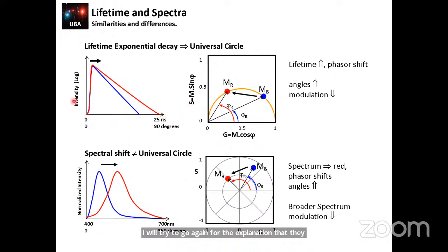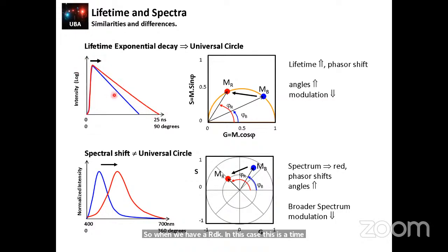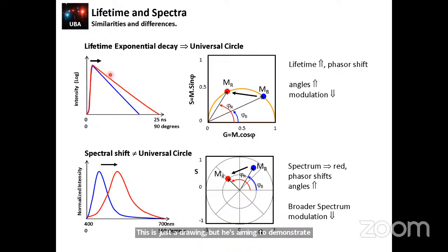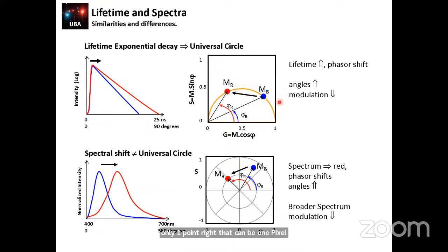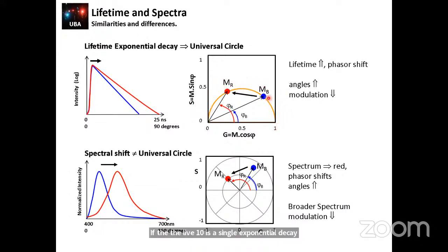When we have a decay — in this case, time domain data — this is just a drawing, but it aims to demonstrate that if we have a short lifetime or a longer lifetime in red, when we transform the data into the phasor, it comes up as a point. One point can be one pixel in an image. We can find the position — if the lifetime is a single exponential decay — on top of this semicircle we call the universal circle, which contains all single exponential decays.